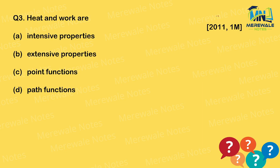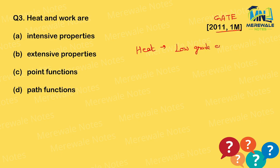Next question from GATE 2011, 1-mark: 'Heat and work are...' Both are forms of energy. Heat is called low-grade energy, and work is called high-grade energy. This distinction comes from the second law of thermodynamics — the first law only tells us energy is conserved, not its quality.